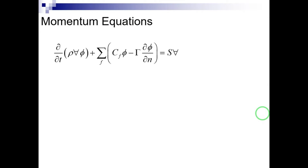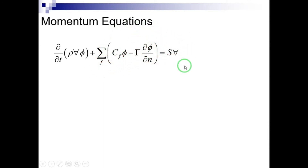Every fluid flow must satisfy the equations of momentum and continuity. The general form of the transport equation represents the law of conservation for each optional control volume. The integral form of a transport equation is written as follows. In this equation, F indicates the face of the control volume surface and n is the direction perpendicular to the surface of the control volume. In momentum equations, velocity is substituted with phi and viscosity with gamma.